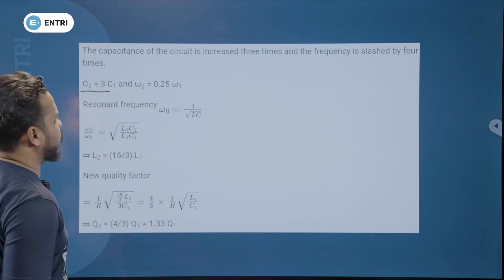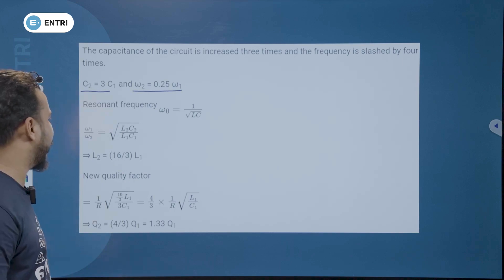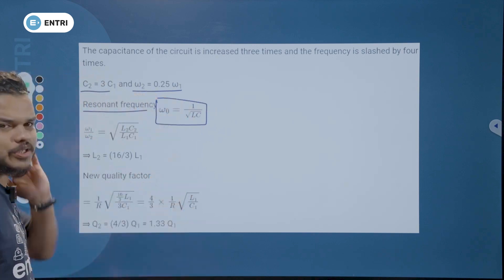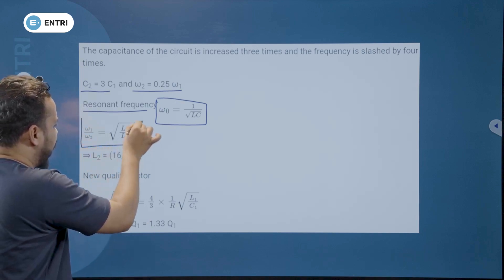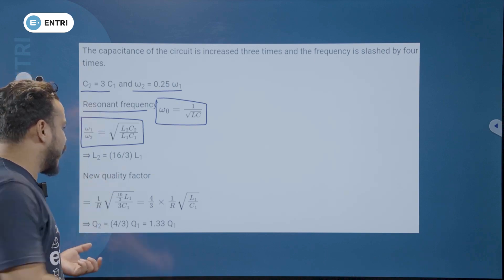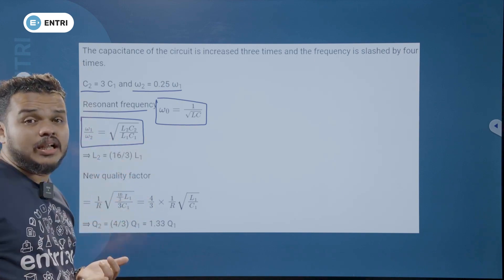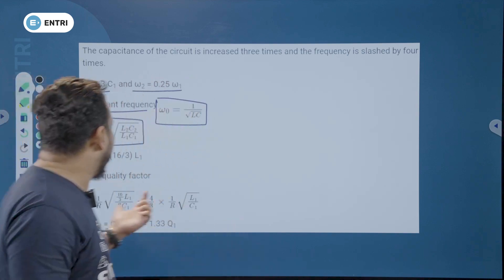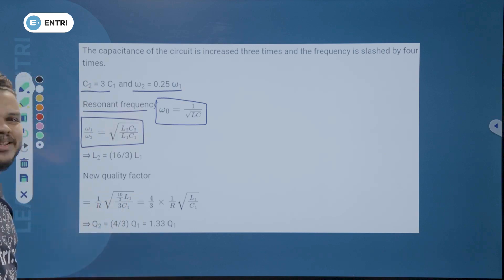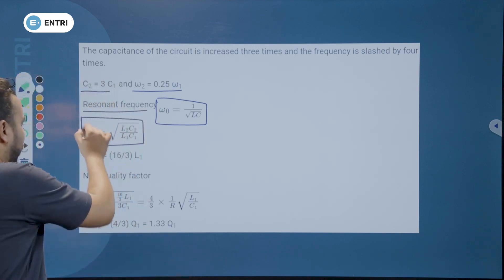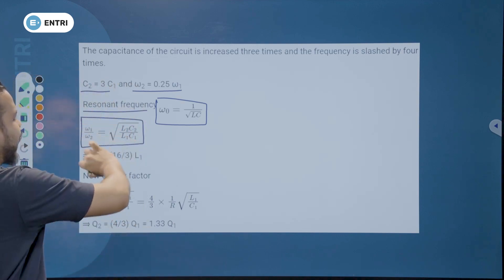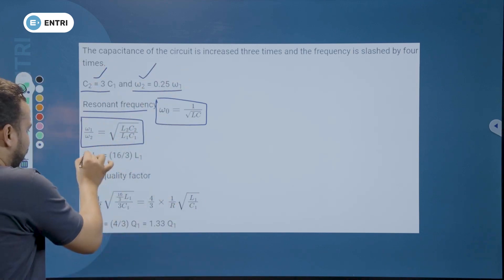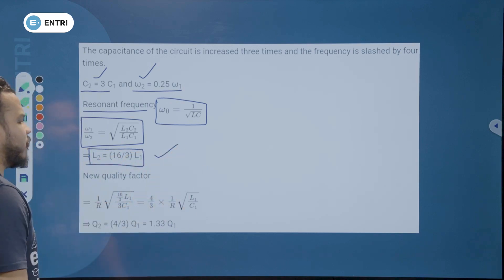In this question, C2 equals 3 times C1, and omega 2 equals 0.25 omega 1. Using the relation omega 1 by omega 2 equals root of L2C2 divided by L1C1, and applying omega 2 equals 0.25 omega 1 with C2 equals 3C1, we get L2 equals 16 by 3 into L1.